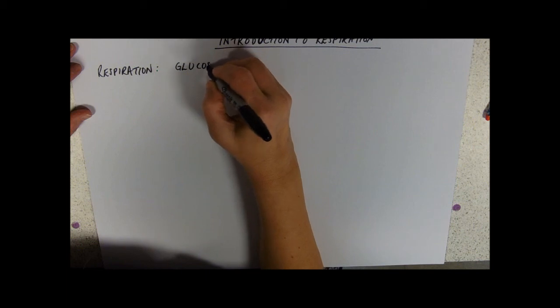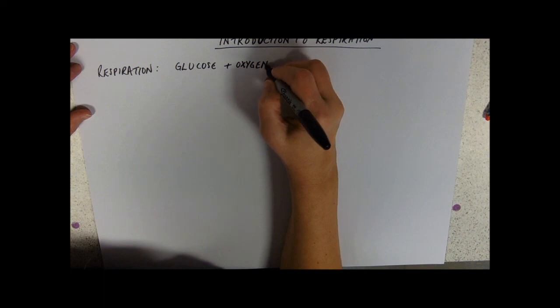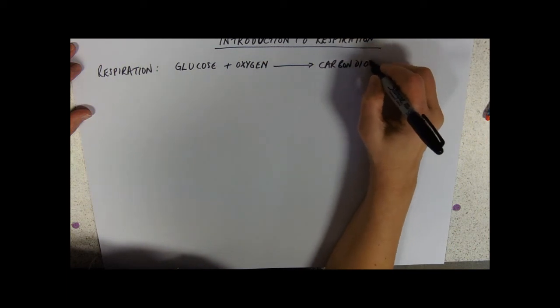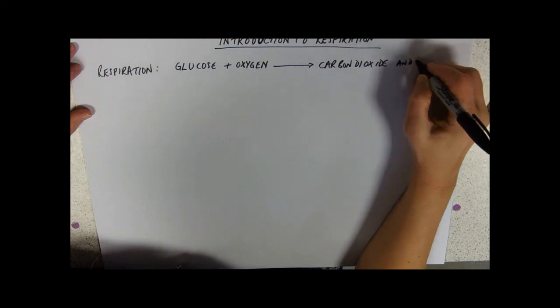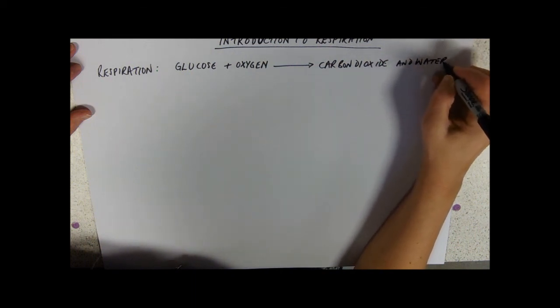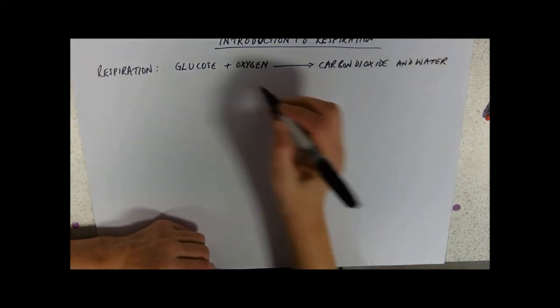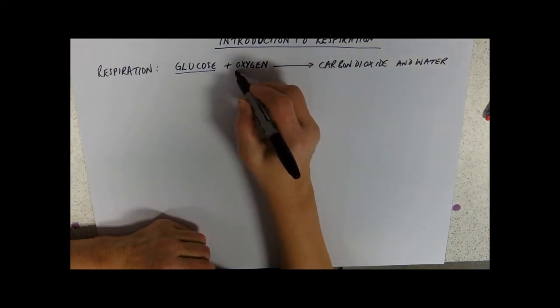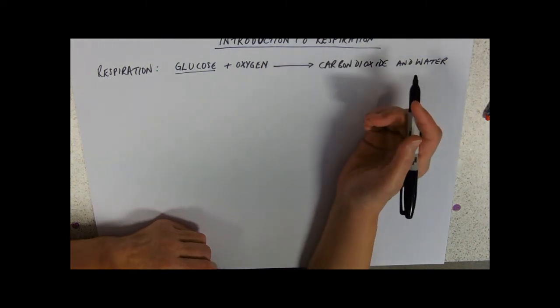You learned a word equation for respiration which went something like this: glucose plus oxygen gives carbon dioxide and water. And that really tells you very little indeed. It tells you what your start point is, glucose, that oxygen is used somewhere in the process, and what your products are, but it doesn't actually tell you what it's for.